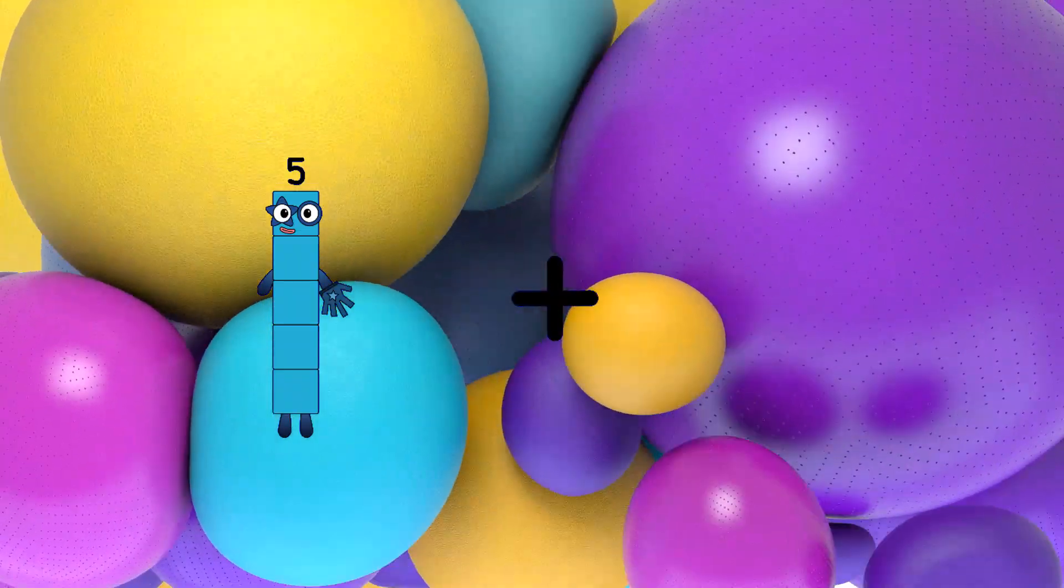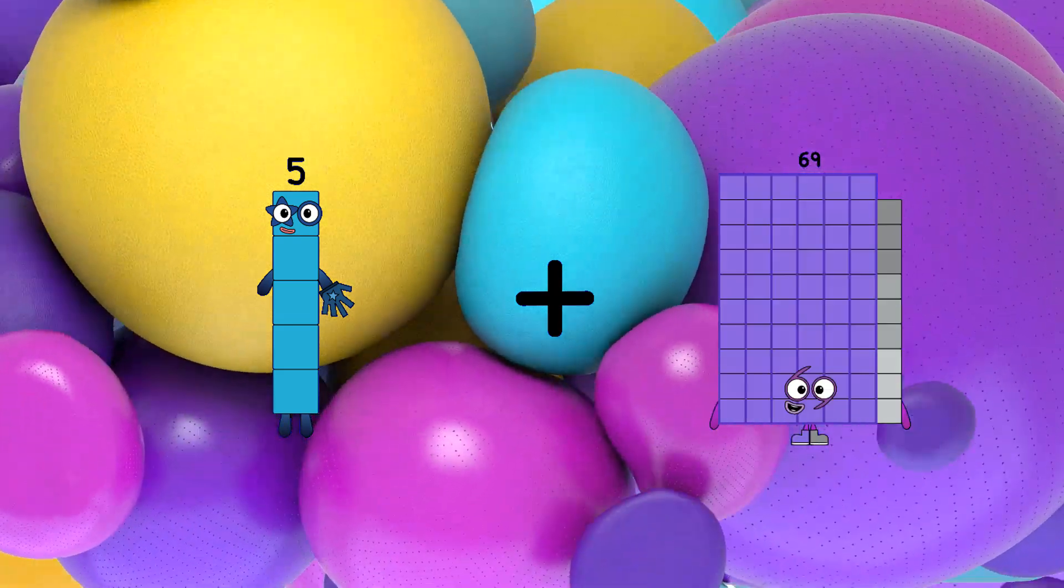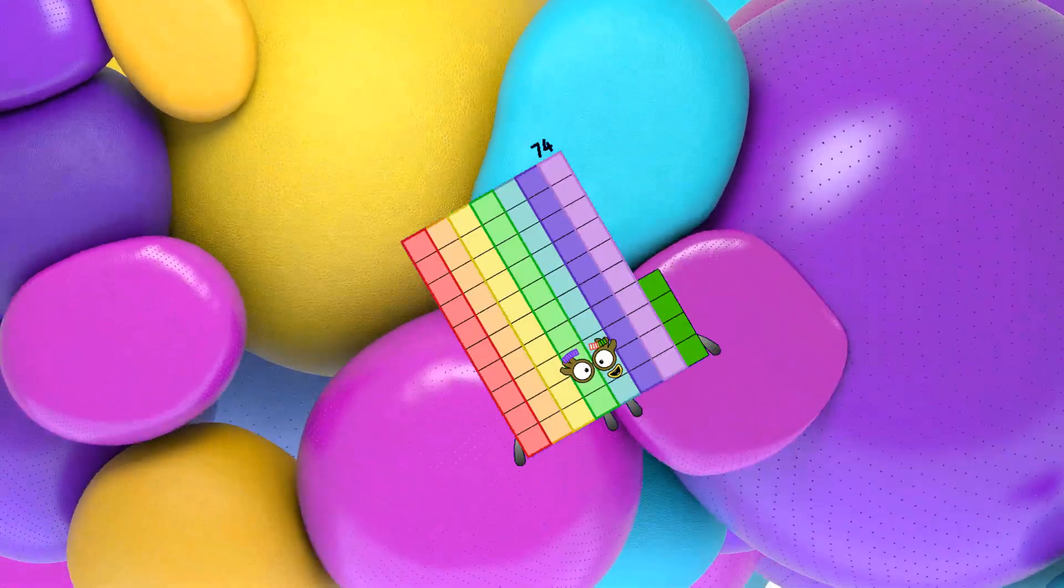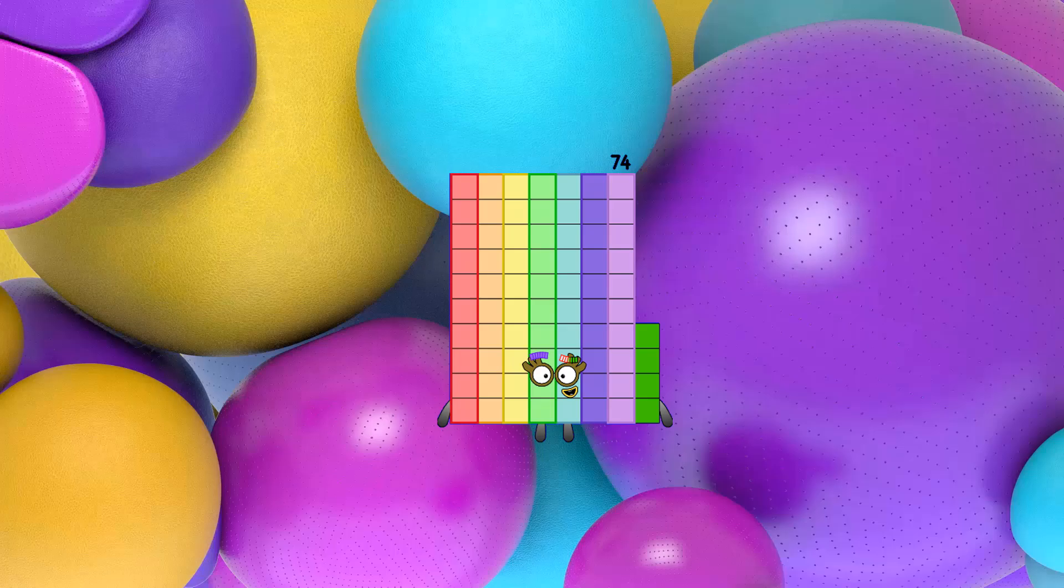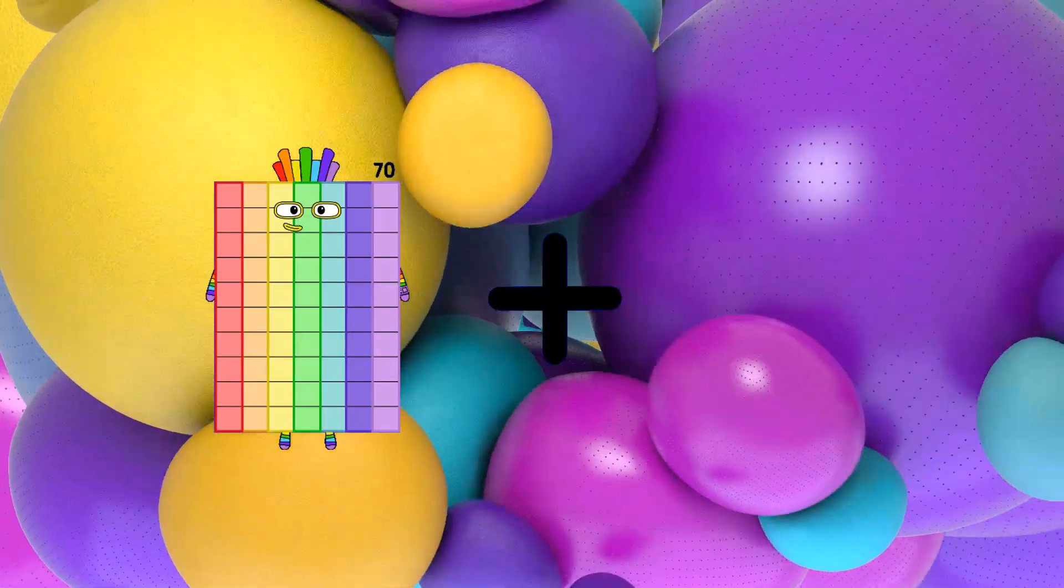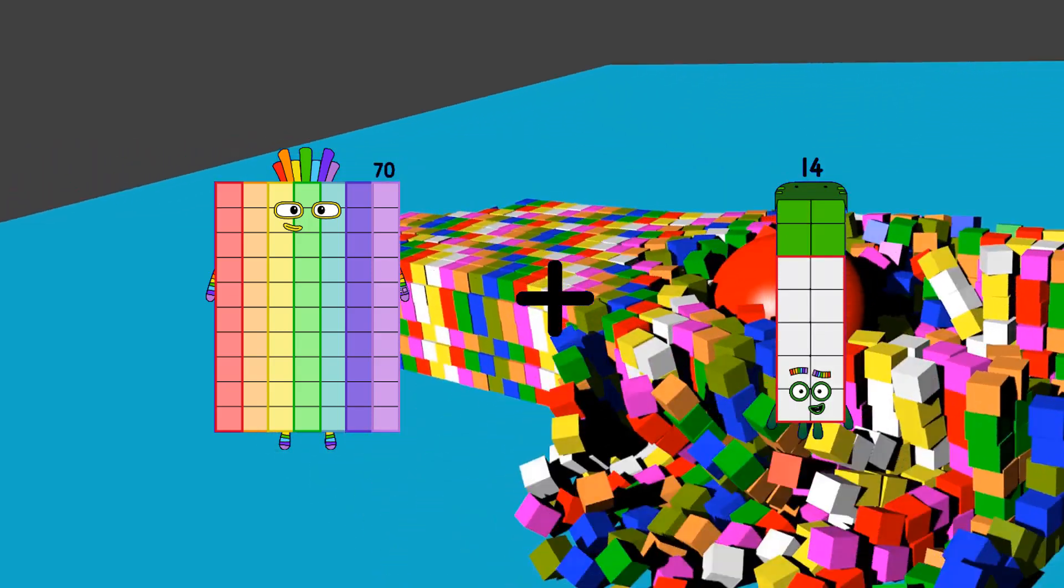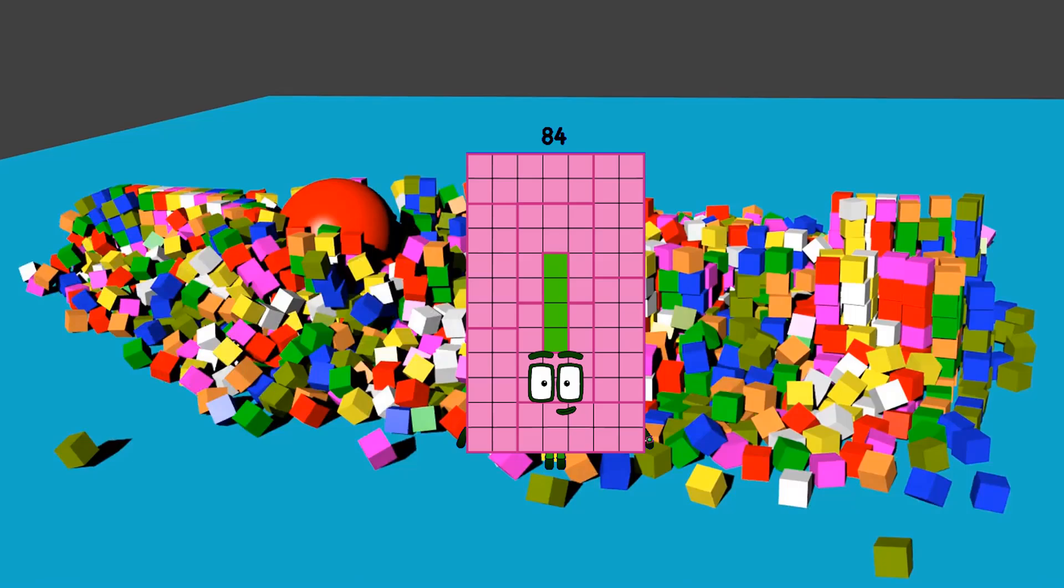5 plus 69 equals 74. 70 minus 14 equals 84.